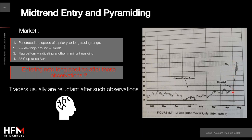He would note that the market had penetrated the upside of a prior year-long trading range, with prices remaining in new high ground for two weeks. Also, prices had just formed a flag pattern — we had an extended trading range for seven months, a sharp rally for about two weeks. By connecting the highs and the lows, we can see something looking like a flag pattern.